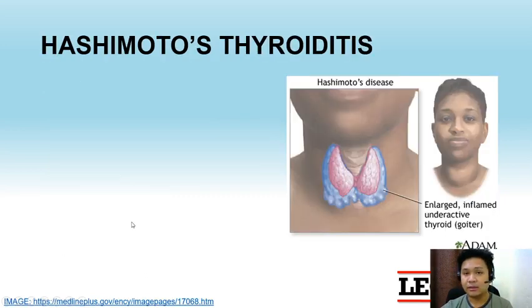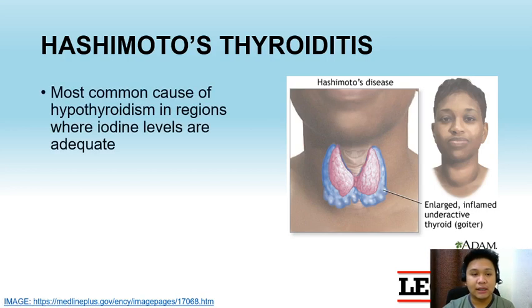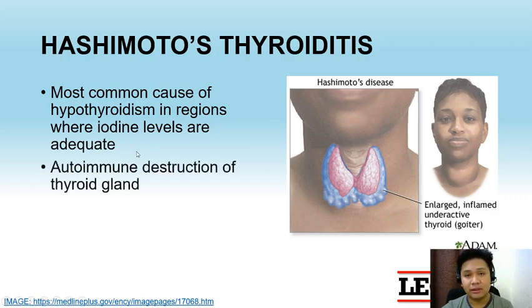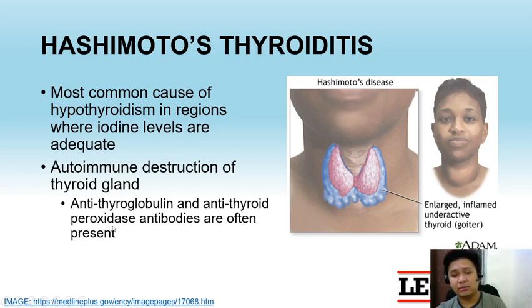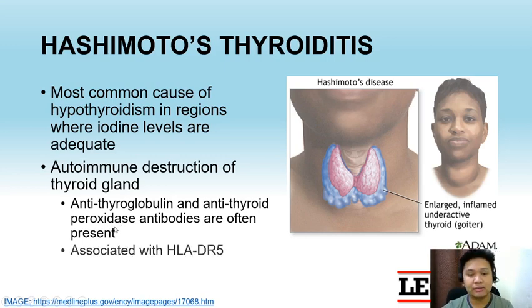Another condition related to the thyroid gland is Hashimoto's thyroiditis, the most common cause of hypothyroidism in regions where iodine levels are adequate. This is also an autoimmune condition wherein there is autoimmune destruction of the thyroid gland. We can see antithyroglobulin and antithyroperoxidase antibodies in some of these patients, and it is associated with the presence of HLA-DR5.